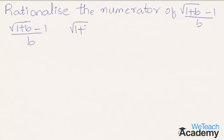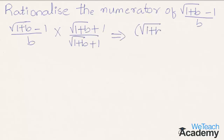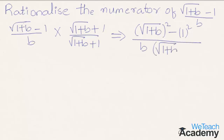So now let us multiply the numerator and the denominator by the rationalizing factor. That implies, by multiplying, we get under root 1 plus b whole squared minus 1 squared, divided by b into under root 1 plus b plus 1.